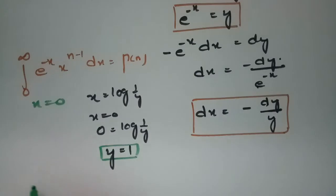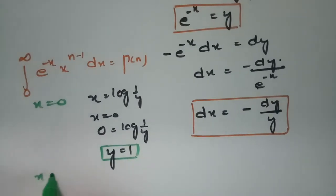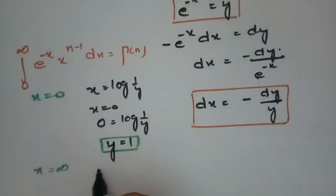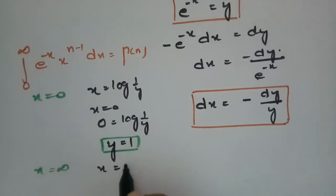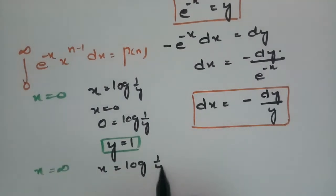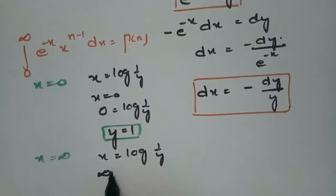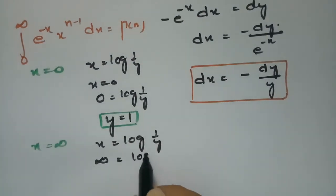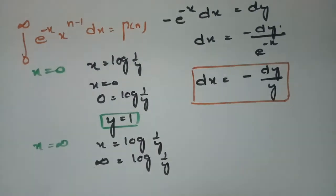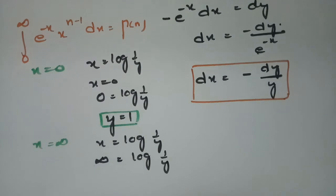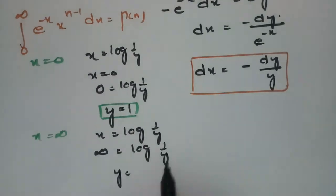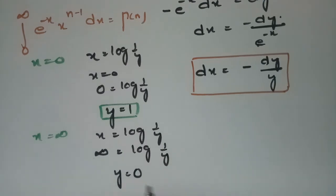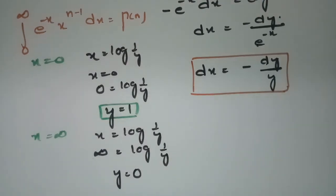And when x is equal to infinity, keeping it in the equation x equals log(1/y), infinity equals log(1/y). So y equals 0, since 1/0 gives infinity. So these are the transformed limits: y goes from 1 down to 0.